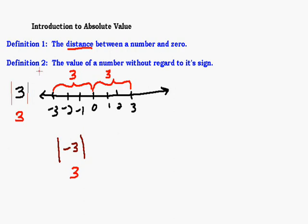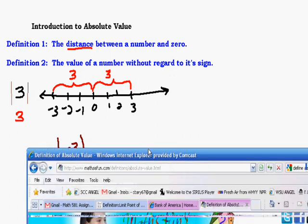This is where definition two comes in, which is a little simpler: the value of a number without regard to its sign. In other words, just ignore whether it's positive or negative and just say the number. Positive three — ignore the positive, just say three. Negative three — ignore the negative, just say three. Without regard to its sign, what number are we looking at? That's basically all it is.